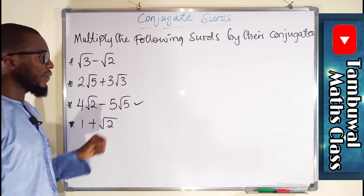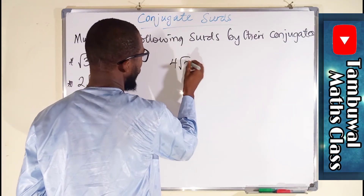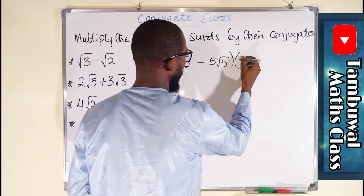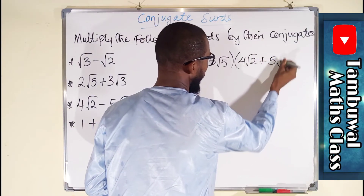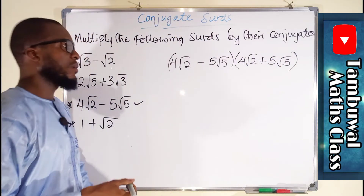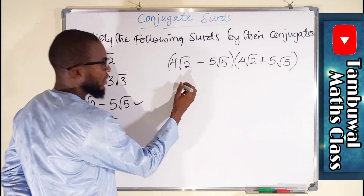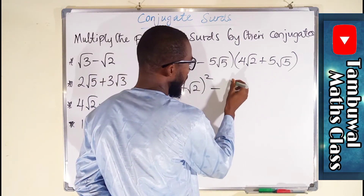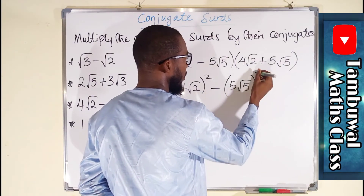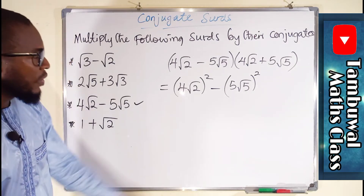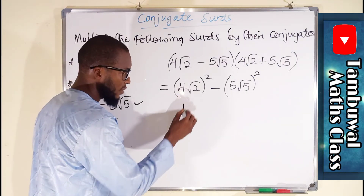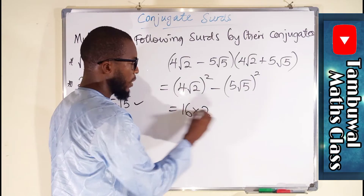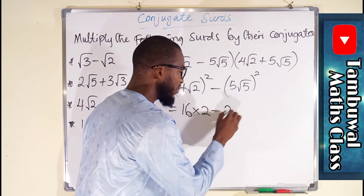Let us move on to the third one: 4√2 minus 5√5. The conjugate of this will be 4√2 plus 5√5. These are also mixed surds. We take the first term, 4√2, and square it, then subtract 5√5 also squared. So we get 4² times (√2)² minus 5² times (√5)², which is 16 times 2 minus 25 times 5.